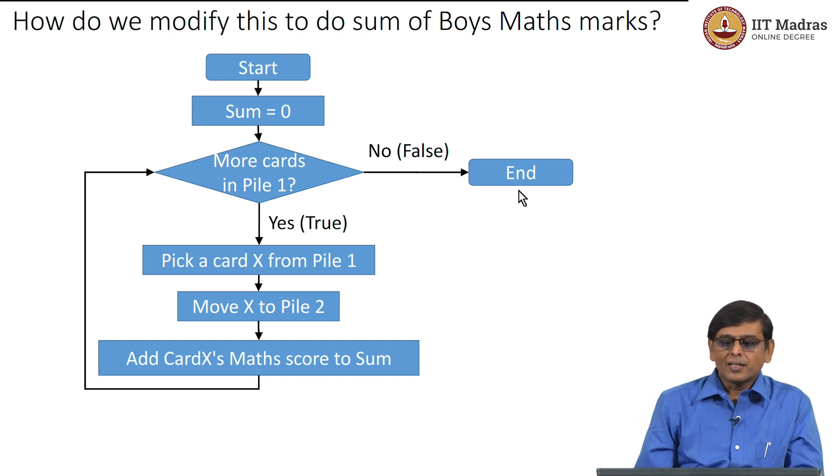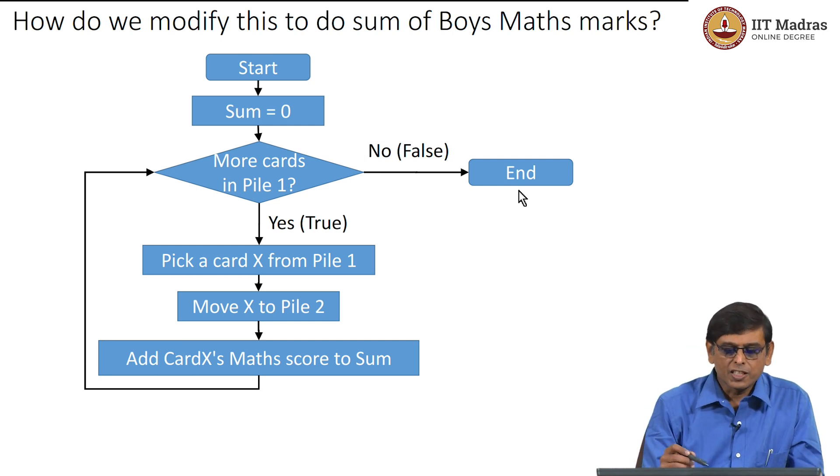If you want to do that, then this flowchart is basically adding all the cards. Somewhere in here we have to check whether the card is that of a boy and only then do the sum, and if it is not that of a boy we should not do the sum. So the question really is where do we do this check of whether it is a boy or not.